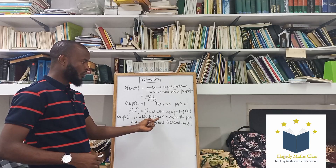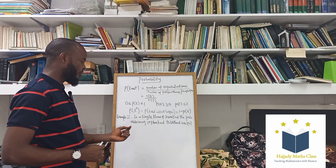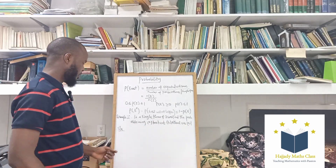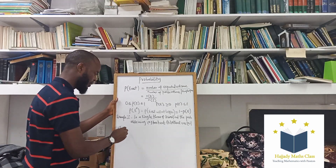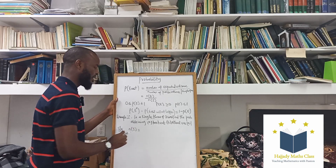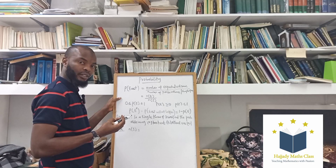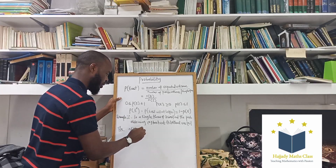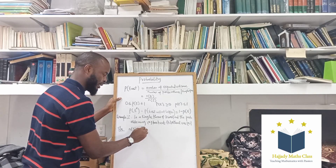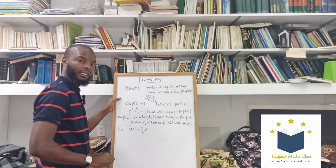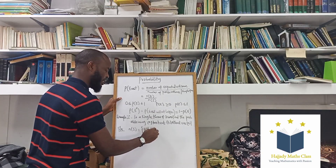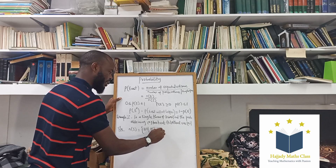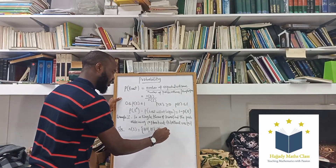Example two: throw of two coins. Find the probability of obtaining two heads — that's the first question. The second question: find the probability of at least one tail. For the sample space, when you flip two coins at the same time, the possible outcomes are: the first coin heads and second heads (HH), first heads second tails (HT), first tails second heads (TH), and lastly tails tails (TT).